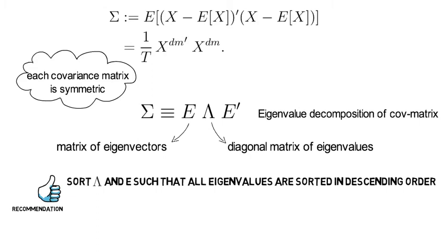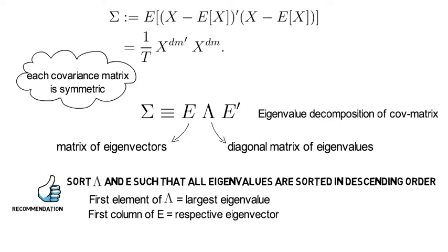I would like to highlight already at that point that I recommend you sort lambda and E such that all eigenvalues are sorted in descending order. So the first element of lambda coincides with the largest eigenvalue, and the first column of E should coincide with its respective eigenvector.